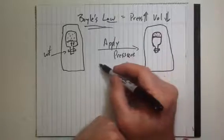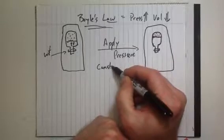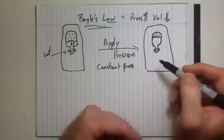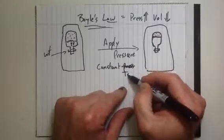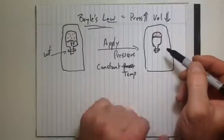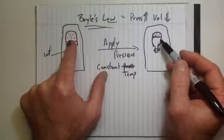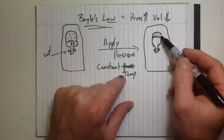They're going at the same speed because we have kept constant temperature. Gases move at a certain speed based on temperature. So these balls over on the left are moving just as fast as these balls on the right.